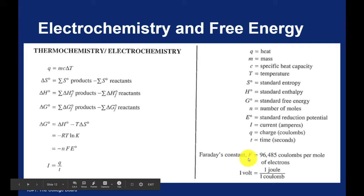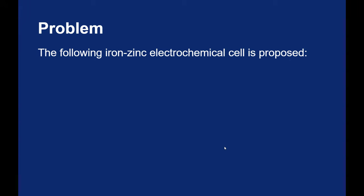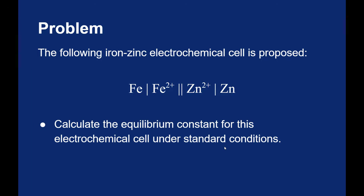And F is Faraday's constant. So, if I have an iron-zinc electrochemical cell, and I'm going to propose that this is happening: the iron is going to oxidize from neutral iron to iron 2+, and the zinc is going to reduce from zinc 2+ to neutral zinc. I want to know the equilibrium constant for this cell, assuming standard conditions. And I want to know if this process is spontaneous, as written.